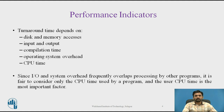An ideal performance of a computer system means a perfect match between the machine capability and program behavior. Machine capability can be improved by using better hardware technology and efficient resource management. As far as program behavior is concerned, it depends on the code used, the compiler used, and other run-time conditions.